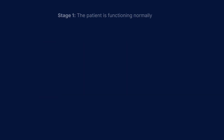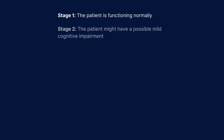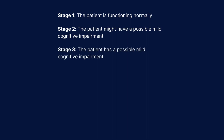The first stage is where the patient is functioning normally. The second stage is where the patient might have a possible mild cognitive impairment. Stage 3 is where the patient has a mild cognitive impairment, and stage 4 is where the patient has mild dementia.